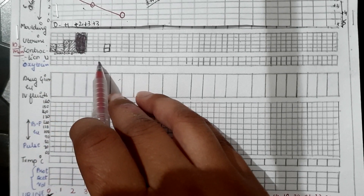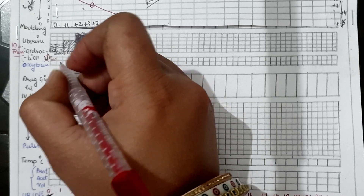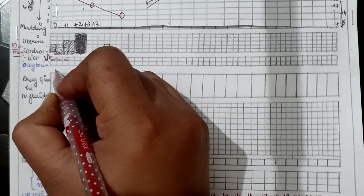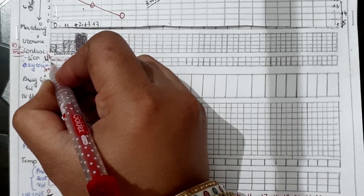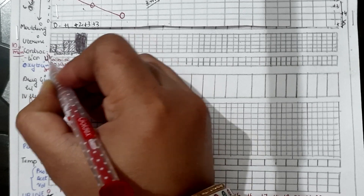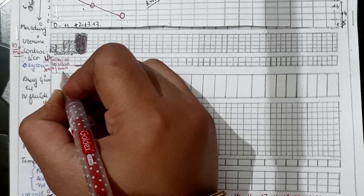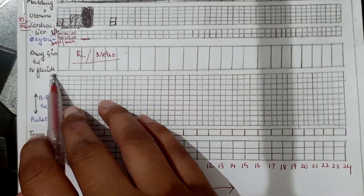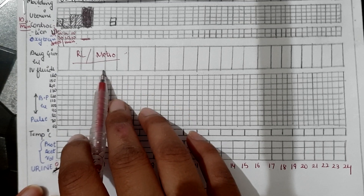Next is oxytocin. In the first row, write the units given per liter — for example, 10 units per liter. If units are increased, write accordingly. In the second row, write the drops per minute — for example, 30 drops per minute. Next are drugs and IV fluids: any IV fluids administered to the patient — like Ringer's lactate, dextrose, or others — should be mentioned in this section.